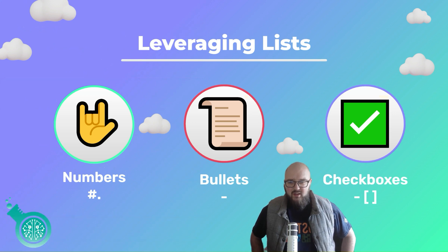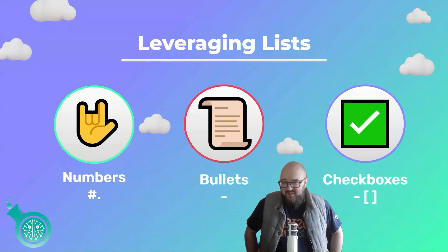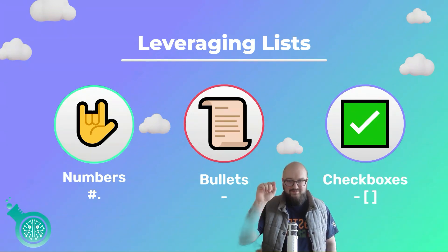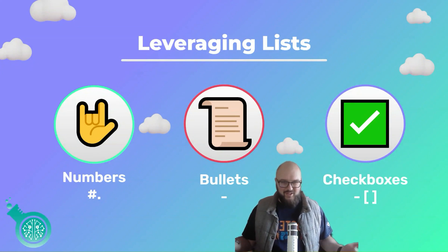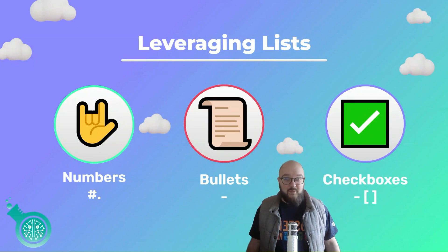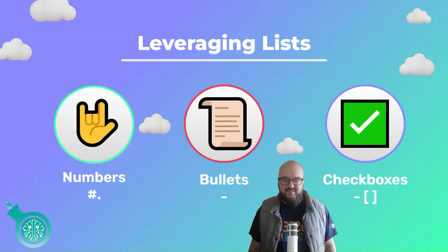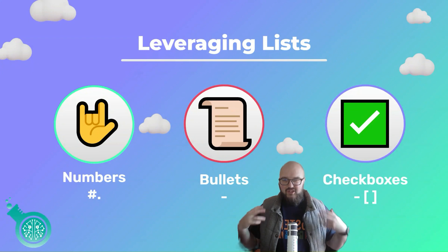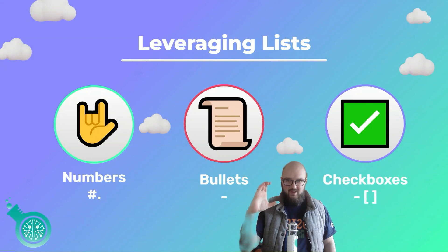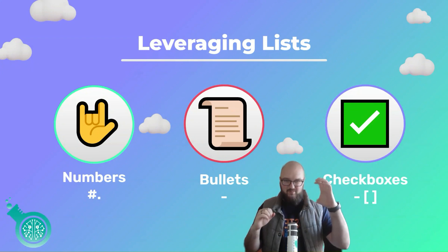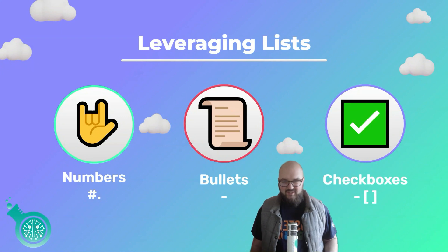Next we have lists, and there are three different ways to create lists in markdown. The first is numbers — easy: just do number one, period, space, and it formats. Similarly, with bullets, all you do is a hyphen and space and it'll create a bulleted list. The less-known one is the checkbox: a hyphen, then square bracket, space, square bracket — that'll turn into a nice little checklist for you.